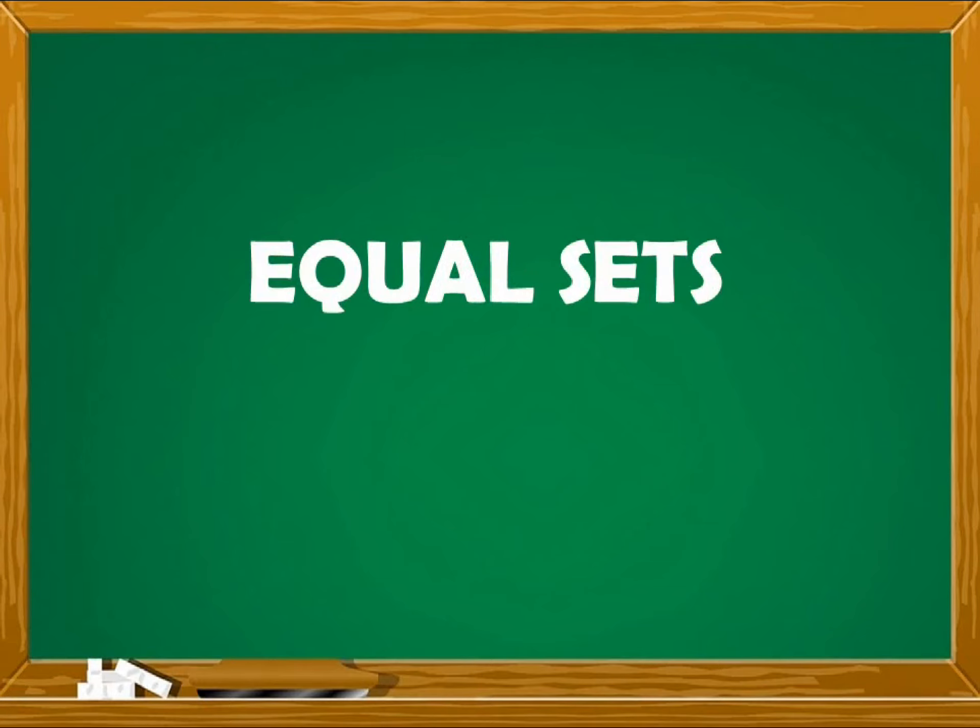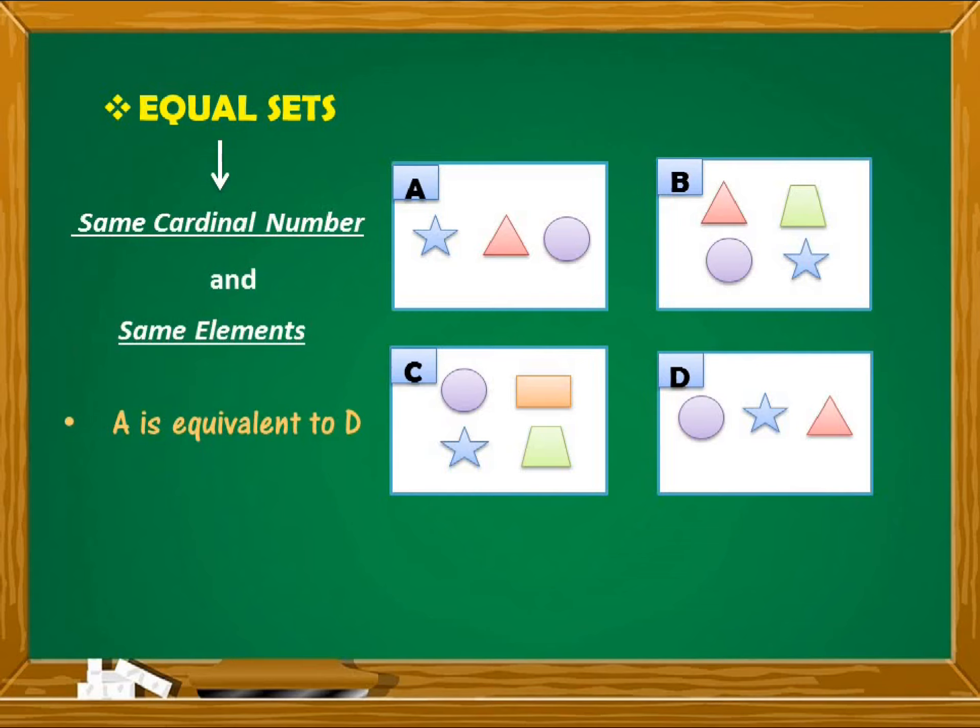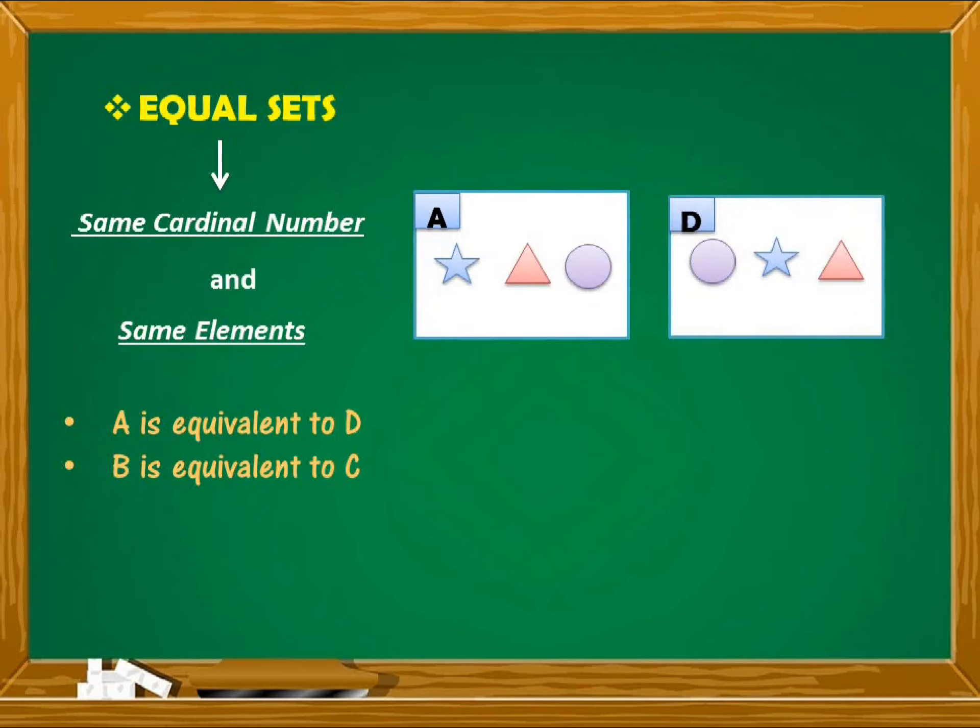Let us now discuss about equal sets. Two sets are equal if they have the same cardinality just like equivalent sets and if they have the same elements. Since we all know that A is equivalent to D and set B is equivalent to C, the question now is, are these sets equal? Let us examine the elements of each set.